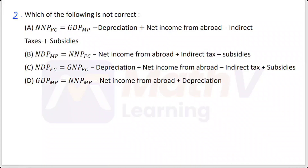Option D: GDP at market price equals NNP at market price minus net income from abroad plus depreciation. We need to identify which option is not correct.